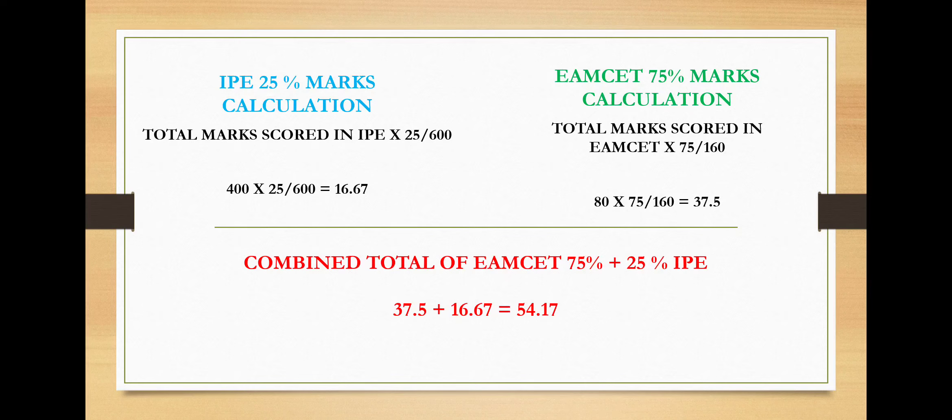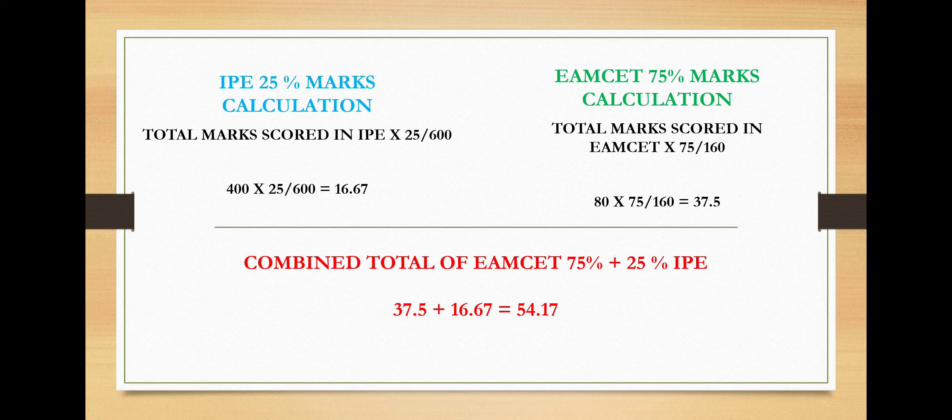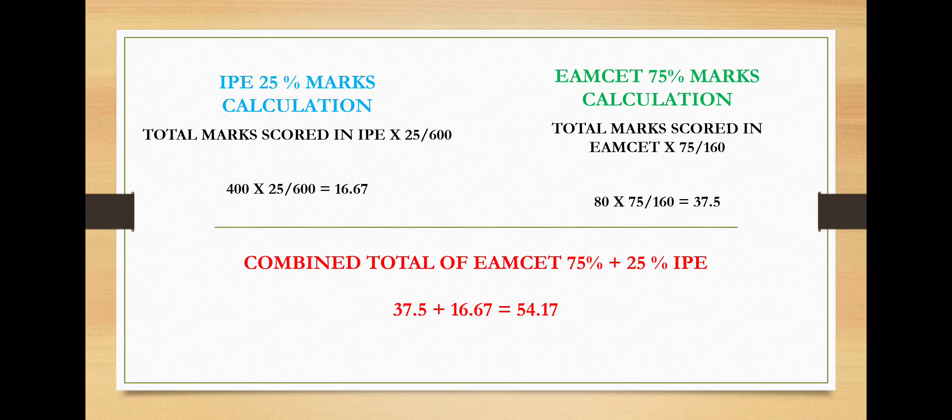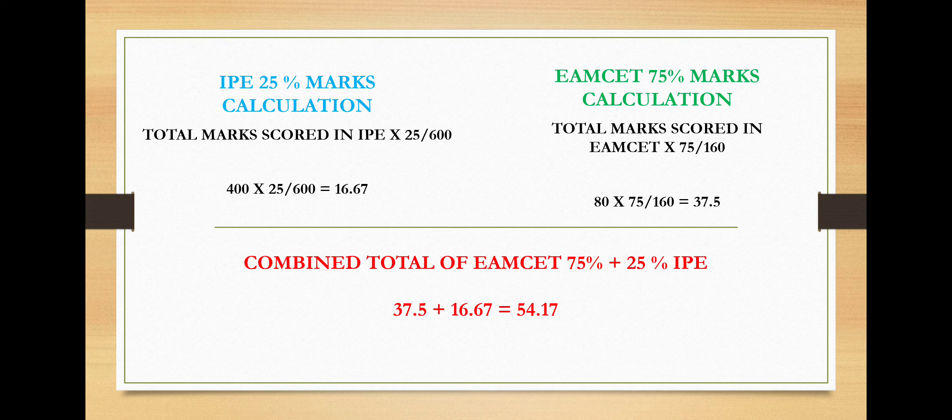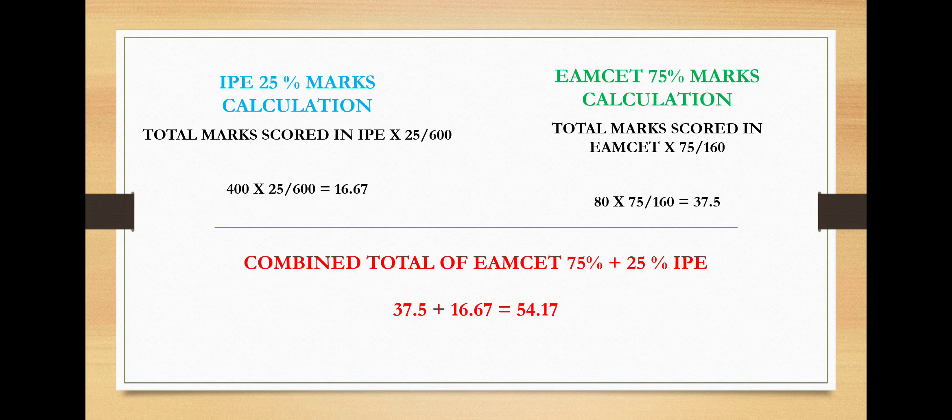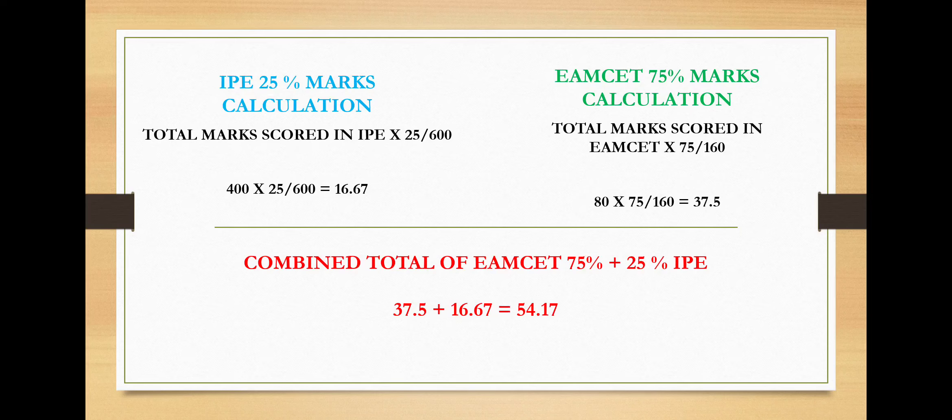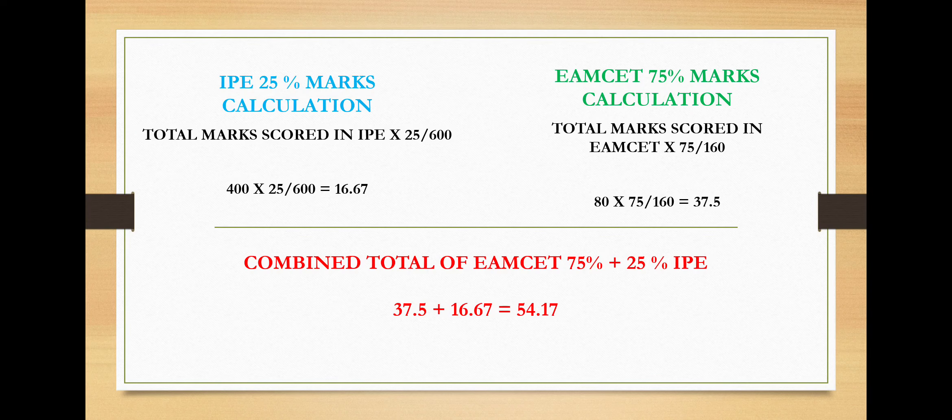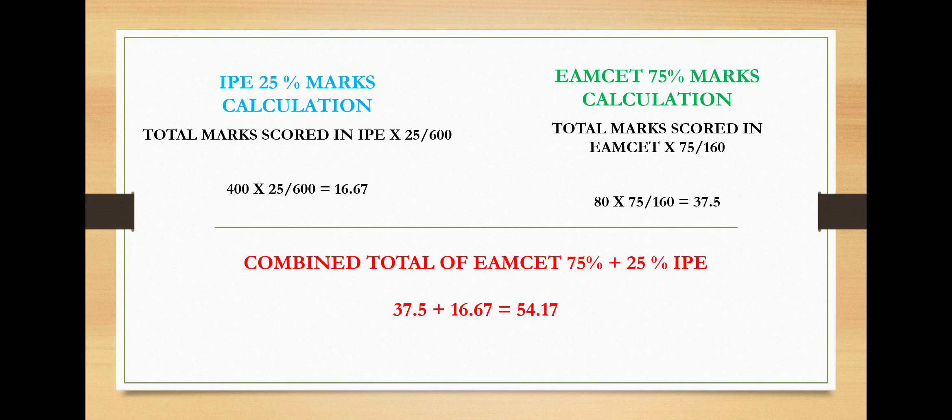The combined total of both EAMCET 75% and 25% of IPE is 54.17. This is a brief explanation of how to calculate 25% marks of IPE and 75% marks of EAMCET. The overall combined total of 25% and 75% is the combined total for EAMCET.